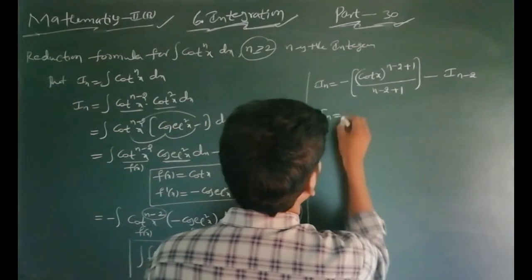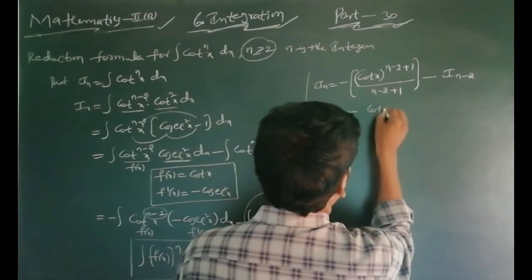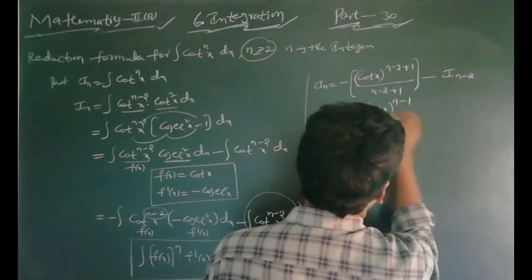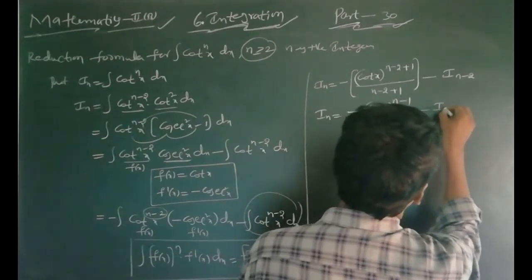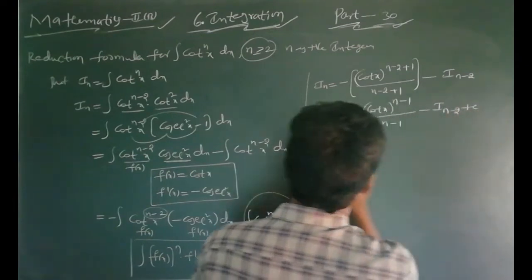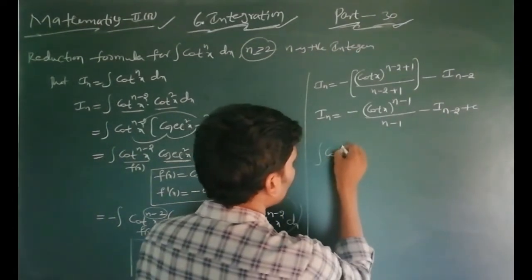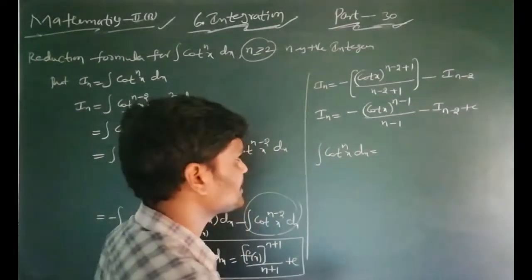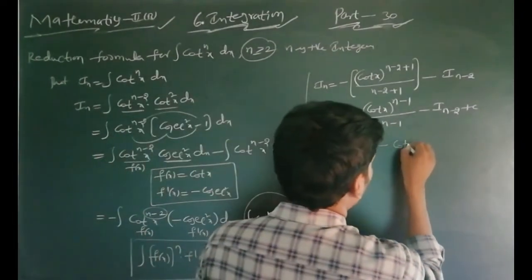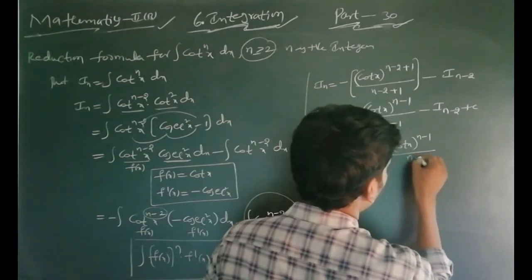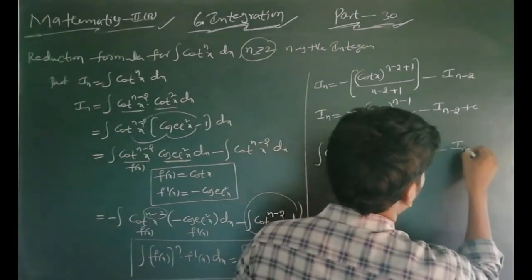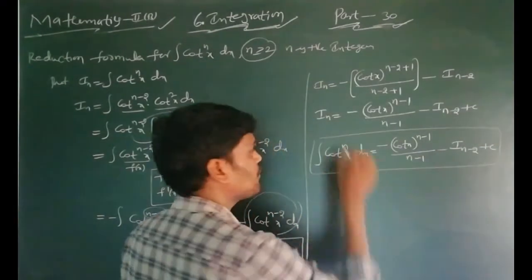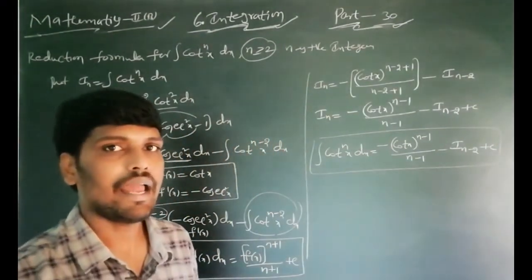Therefore, I_n equals minus cot^(n-1) x divided by (n-1) minus I_(n-2) plus c. This is the reduction formula of cot^n x dx.